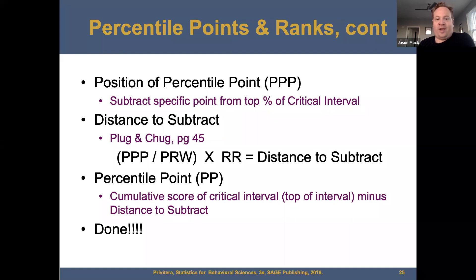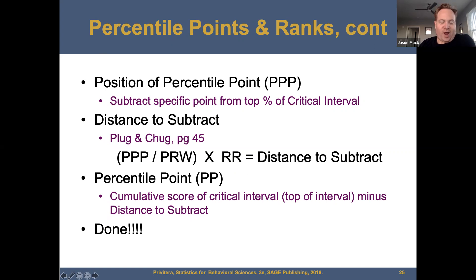Percentile points and ranks continued. The position of the percentile point (PPP): you subtract the specific point from the top percentage of the critical interval. The distance to subtract is PPP divided by the PRW times the RR. The percentile point equals the top of the interval minus the distance to subtract.